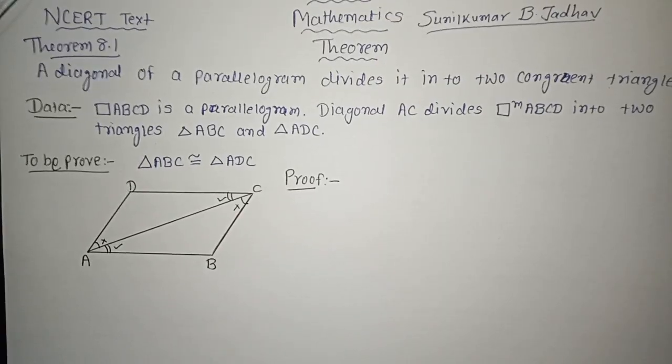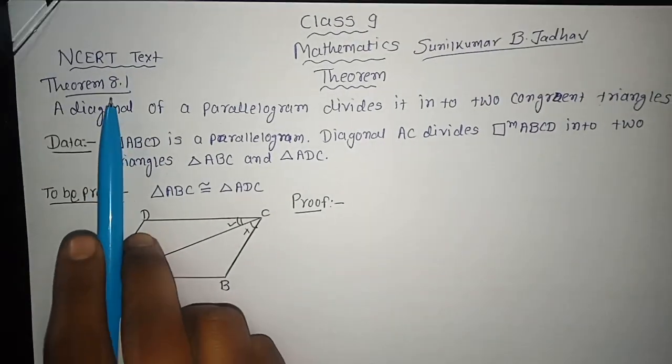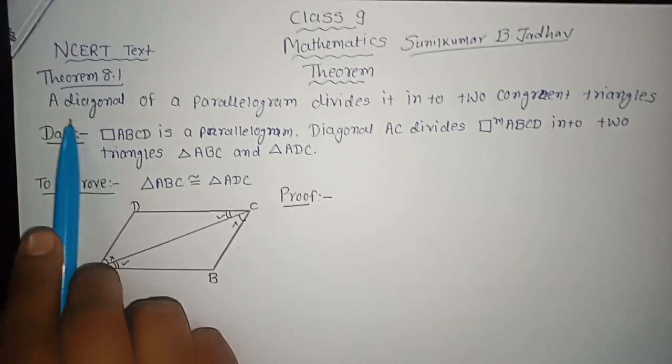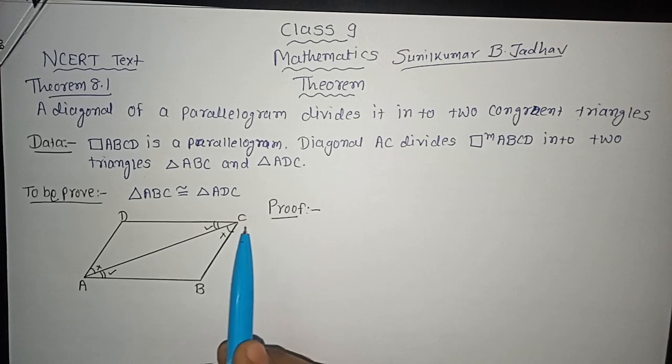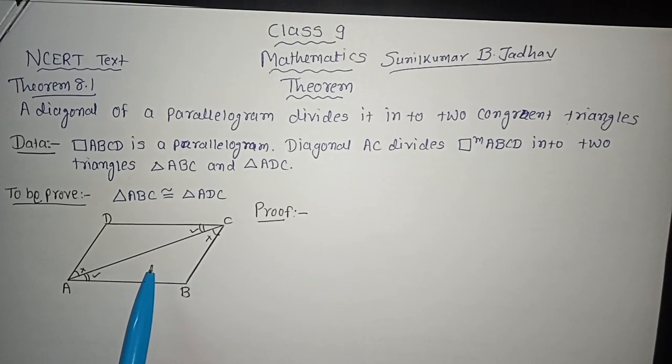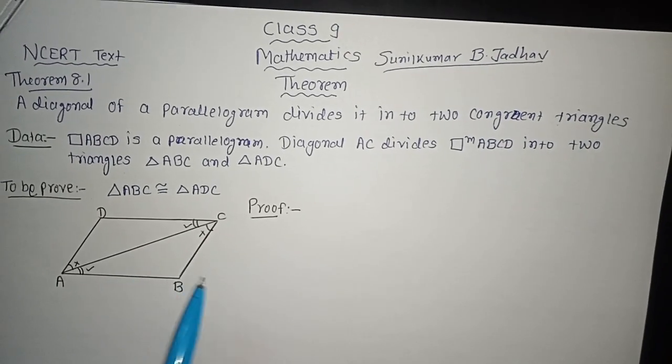What is that theorem? The theorem is: if we take a parallelogram and draw its diagonal, then the diagonal divides the parallelogram into two triangles. We have to prove that both the triangles formed by that diagonal are congruent. This is theorem 8.1 in the NCERT textbook — a diagonal of a parallelogram divides it into two congruent triangles.